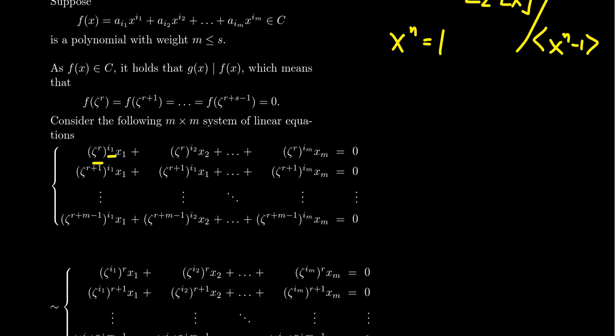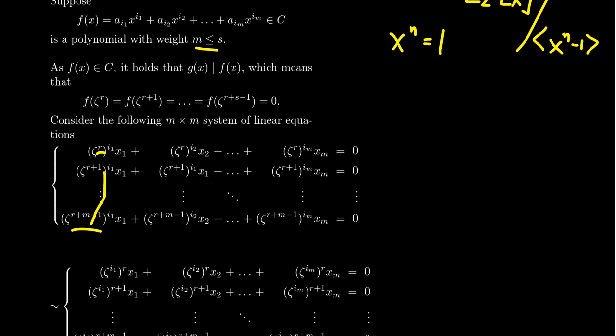The system looks like: ζ^{R·i1}·x1 + ζ^{R·i2}·x2 + … + ζ^{R·iM}·xM = 0 for the first equation, then replicate with ζ^{R+1} for the second equation (same exponents otherwise), continuing through ζ^{R+2}, ζ^{R+3}, all the way down to ζ^{R+M−1}. We go up to M equations because M may be strictly less than S, but since M ≤ S we always have enough roots of unity. This gives us an M×M linear system.